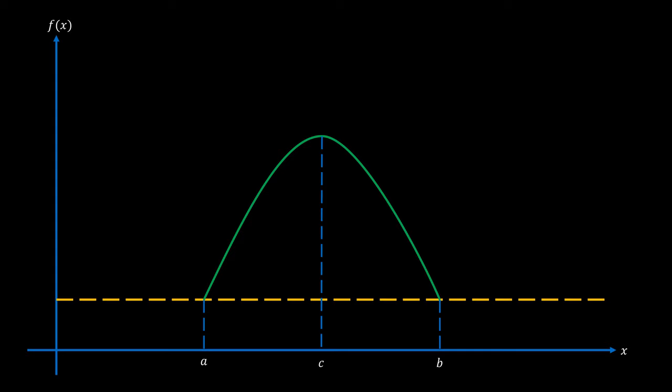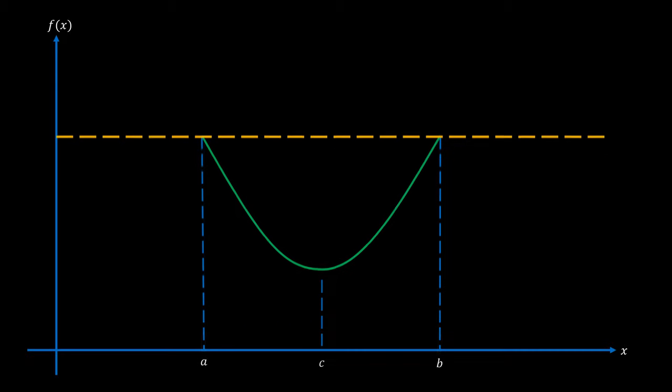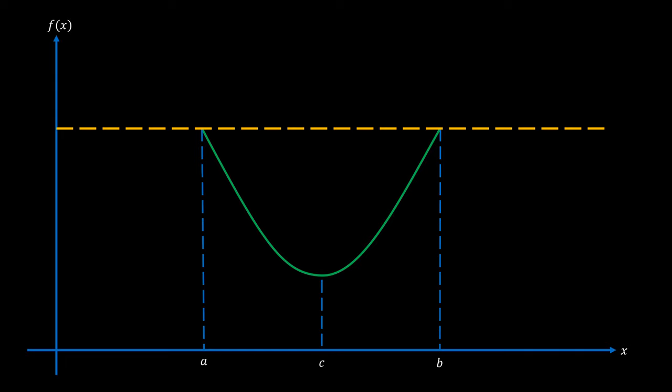If you watched my last video on Fermat's theorem, then you should be able to see that from a function such as this one, we have a local maximum at c, and using Fermat's theorem, we know that this derivative at point c must be equal to zero. But what if we have a local minimum instead? Again, using Fermat's theorem, we know that at point c the derivative is equal to zero.